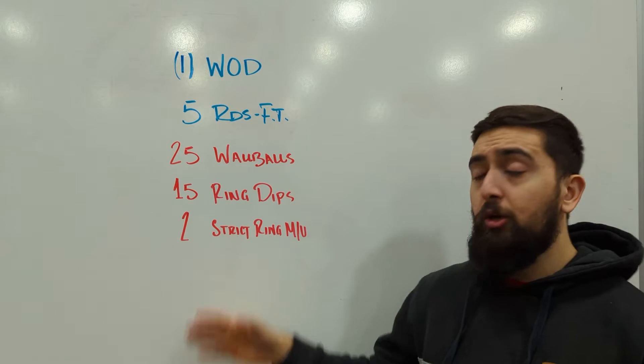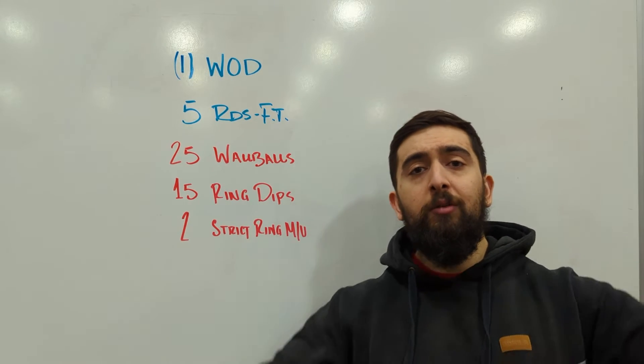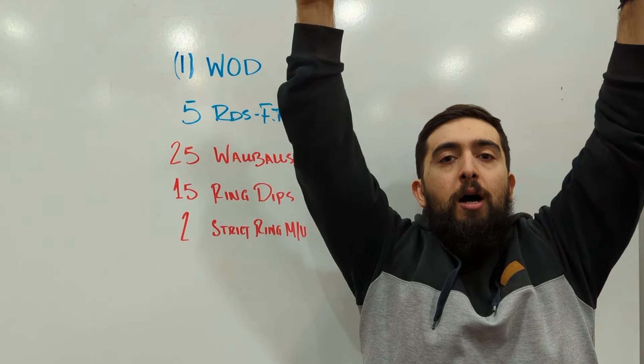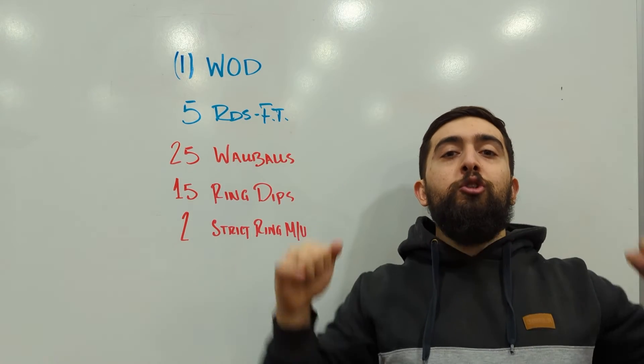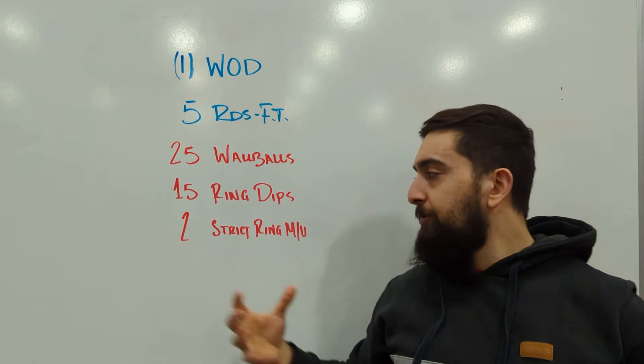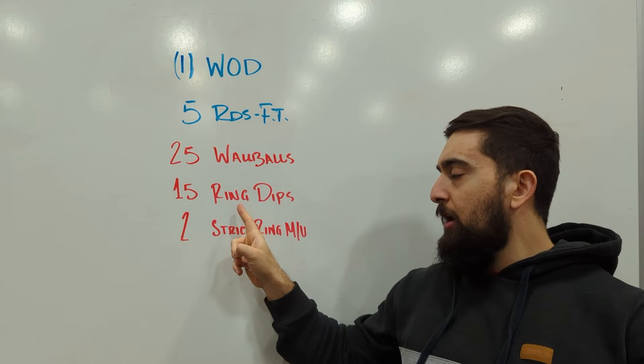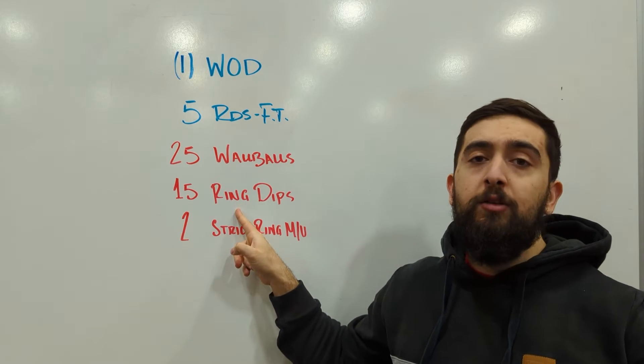If you want, you can also do this off the bar too. If you want to do some strict pull-ups, you can do some chest to bars or some strict chin over bar pull-ups again to really emphasize the pulling strength here and to emphasize the pushing strength on this one.